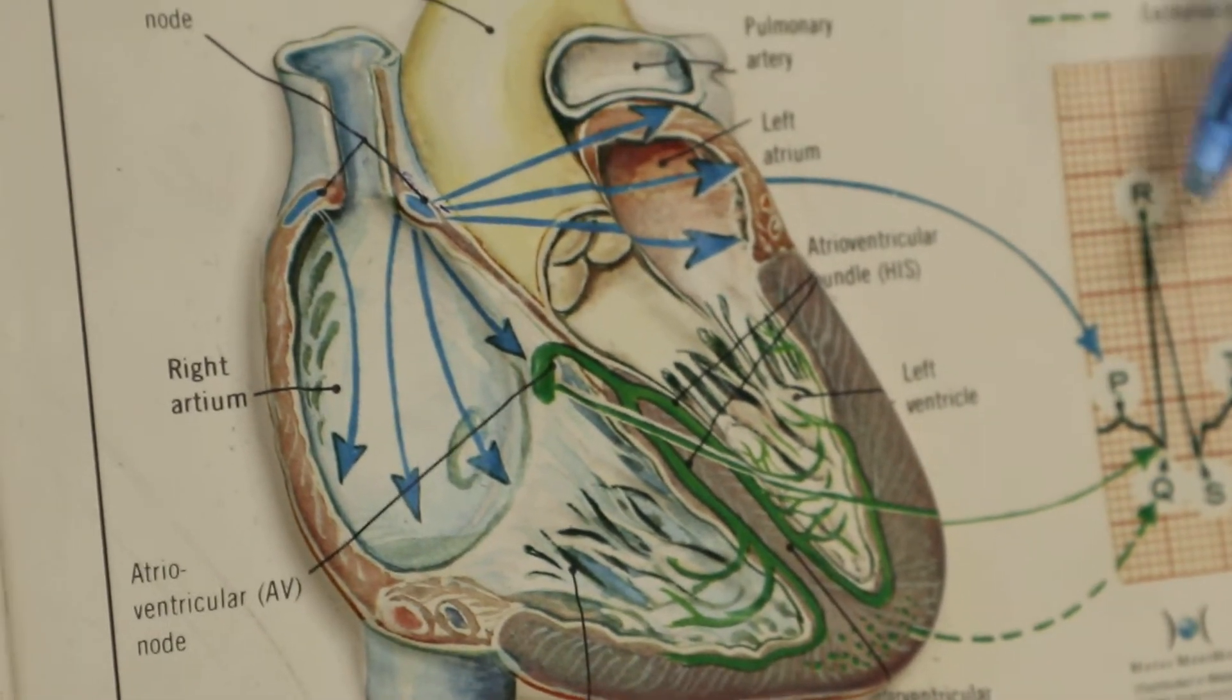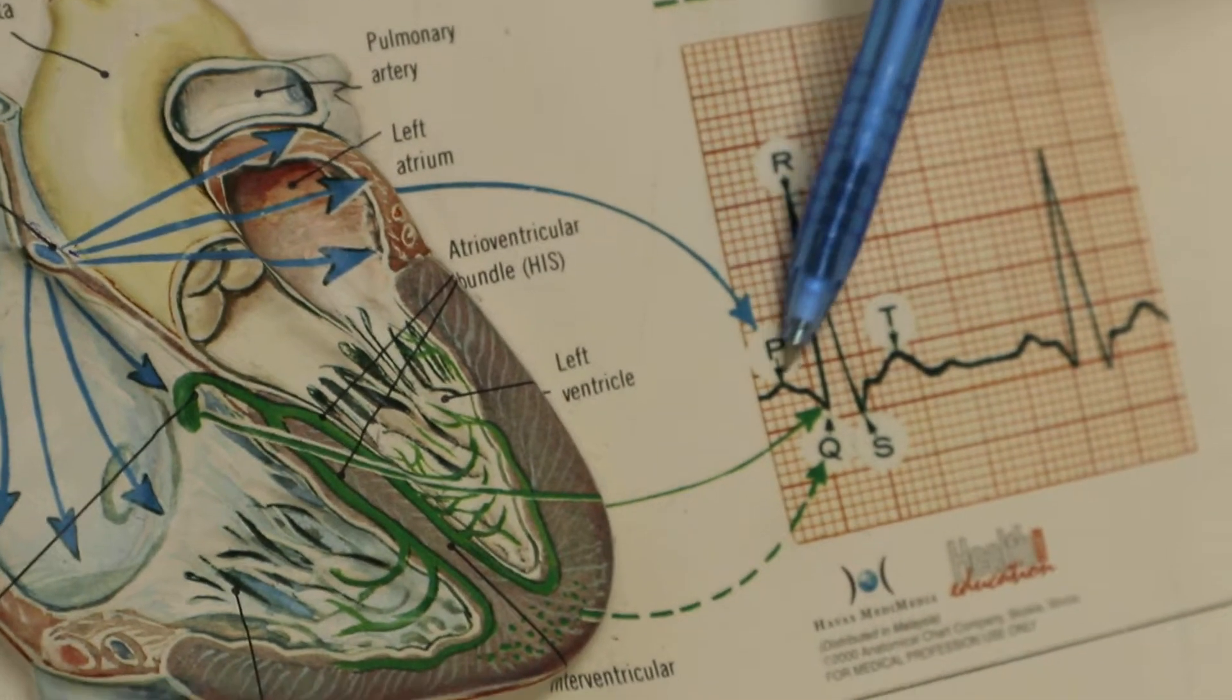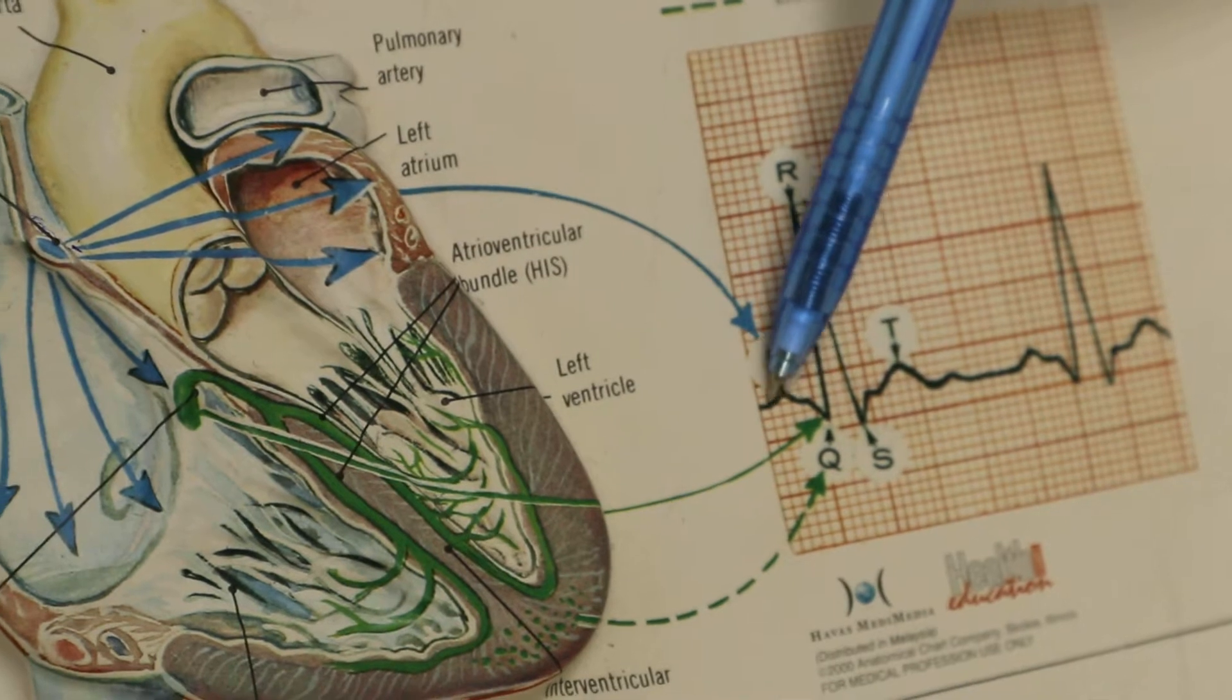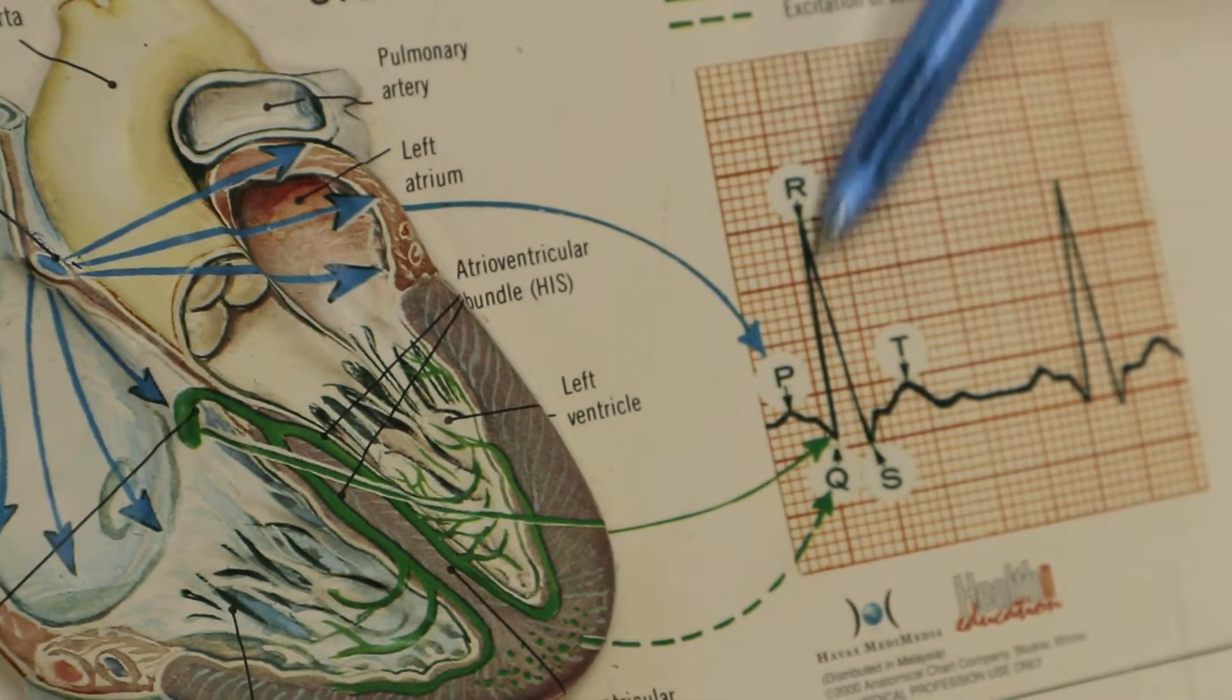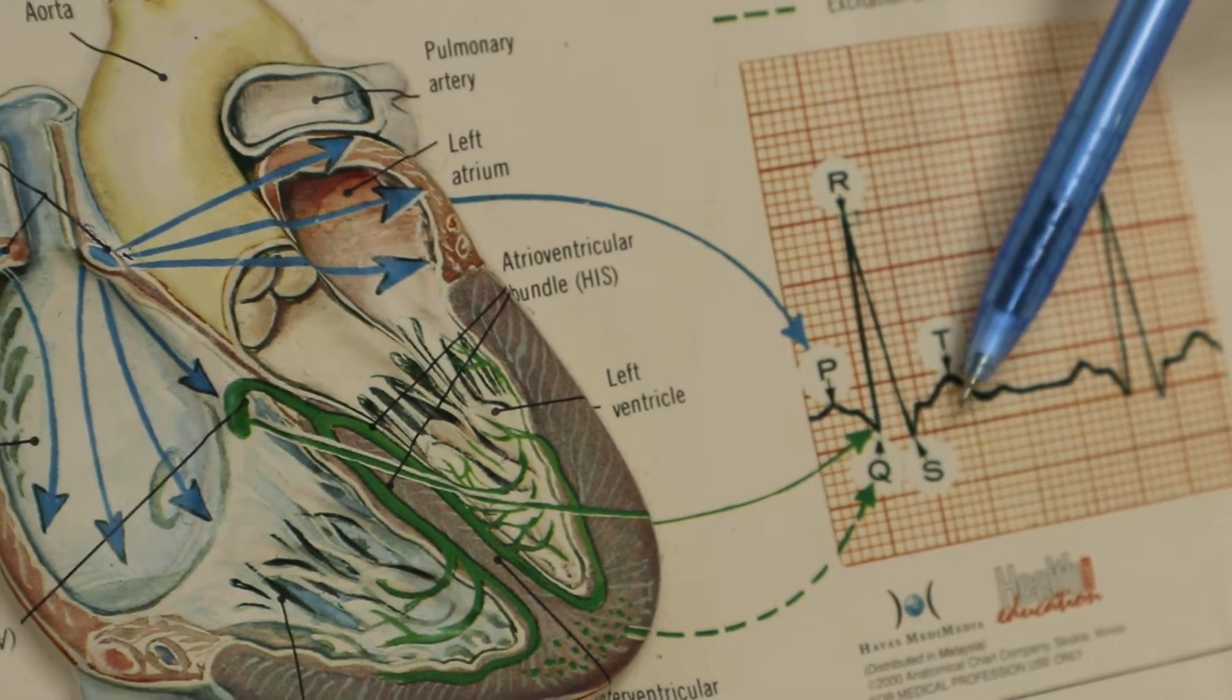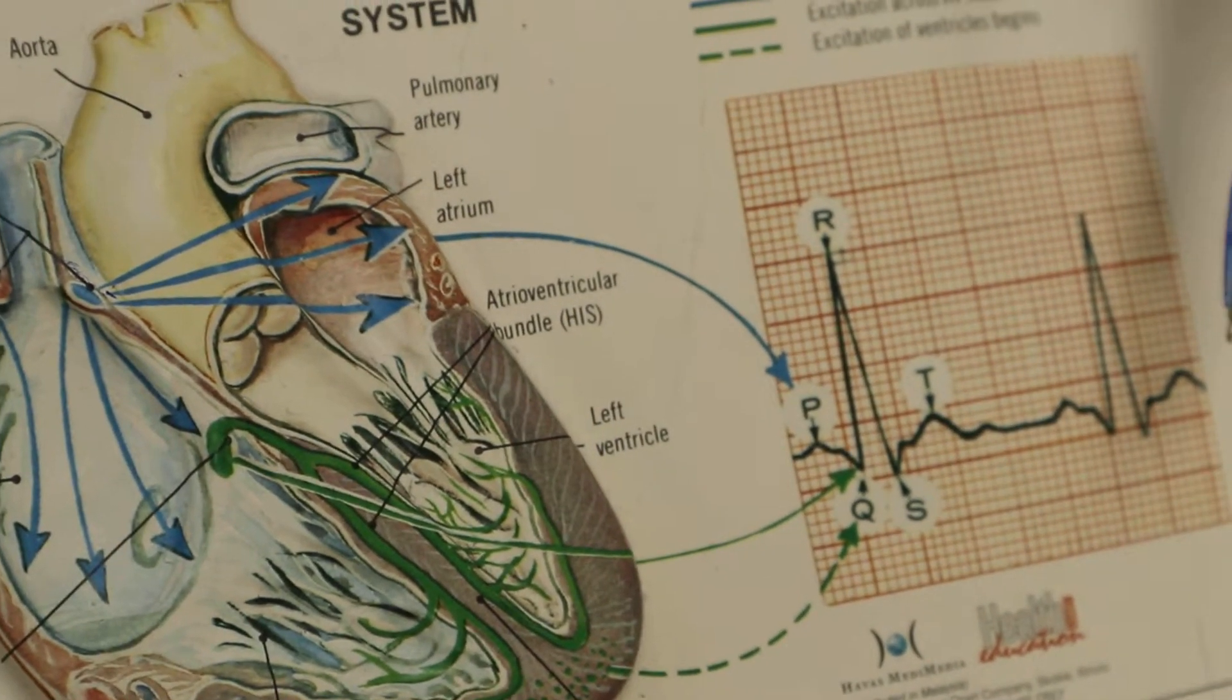Now, let's talk about the ECG. The P wave correlates to atrial depolarization of the heart. The QRS complex represents left ventricle depolarization, and the T wave represents repolarization of the ventricles.